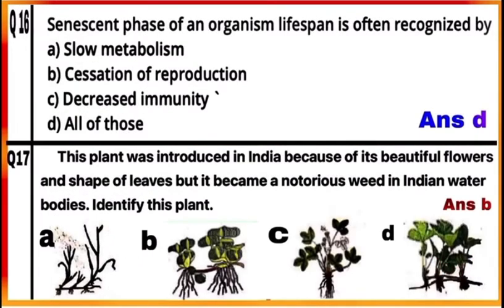Question 16: The senescent phase of an organism's lifespan is often recognized by the terminal irreversible stage of aging, called senescence. This is the last phase of the lifespan that usually leads to death. This phase can be recognized by slow metabolism, cessation of reproduction, and decreased immunity. So the correct option is D — all of these.